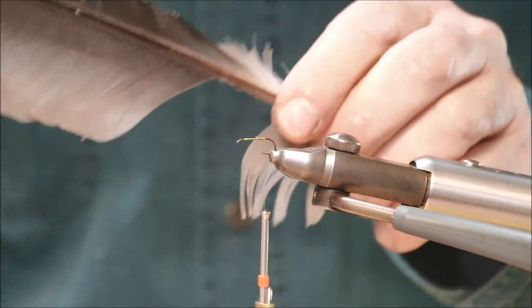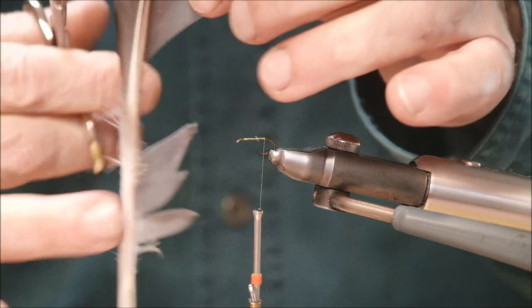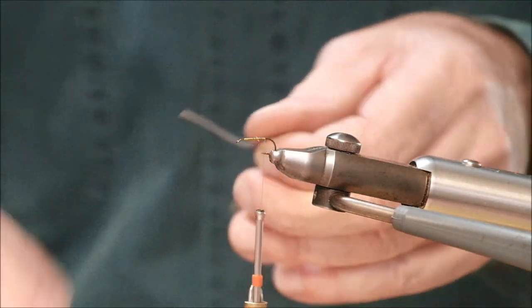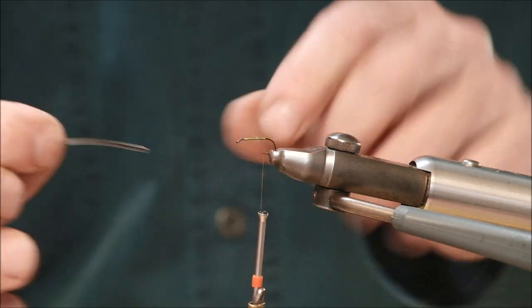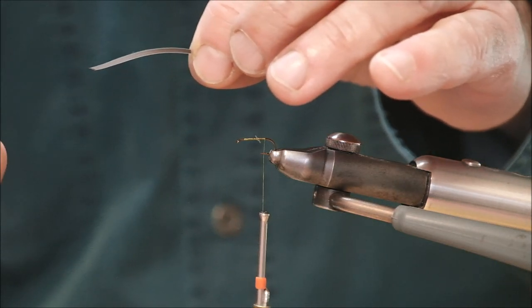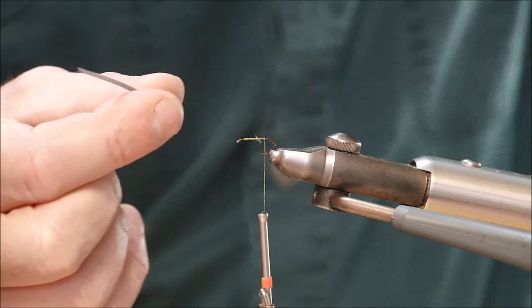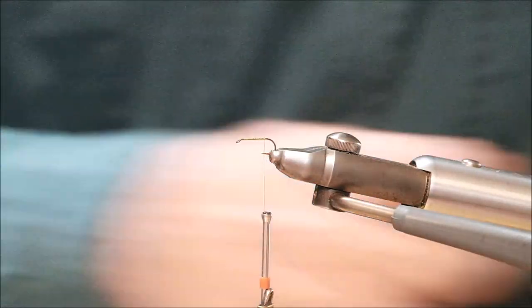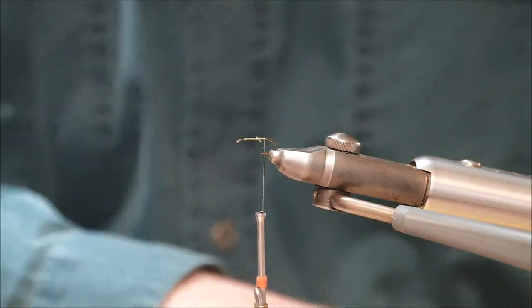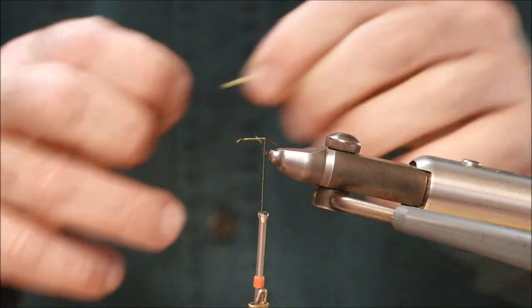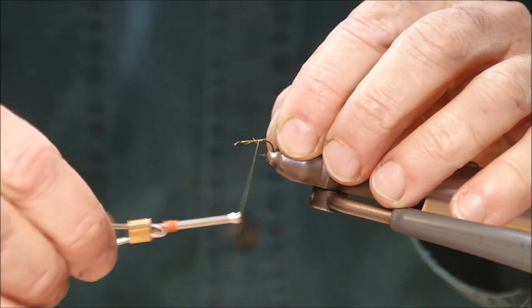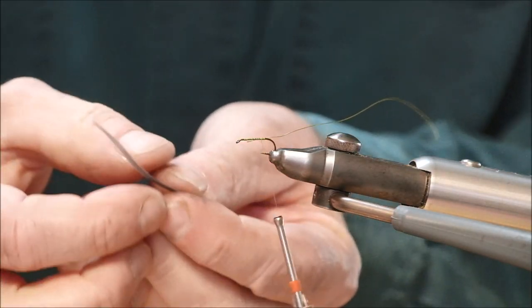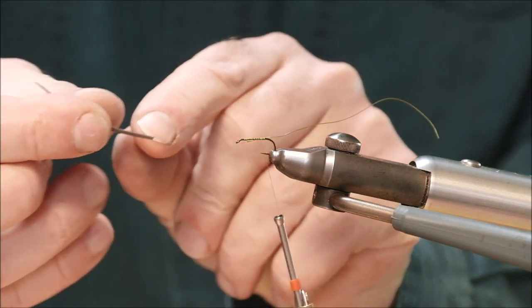I'm putting down the tying thread as a base for a body. Now that's a heron's feather. I found it on the bank of the river. I'm going to make the body from this, just a little slip of heron. But of course, it's quite delicate, so you need to reinforce that. What I'm going to do is use this wire here to reinforce it, and it will also create a rib, a segmented effect.